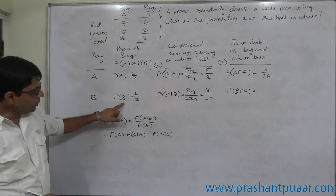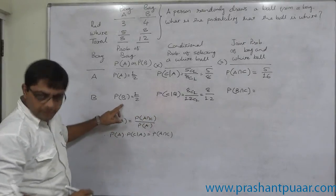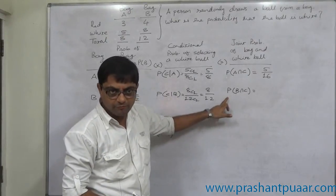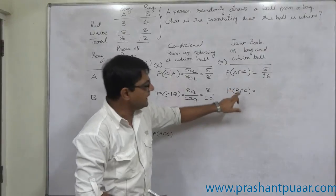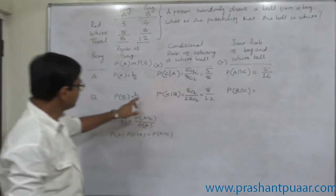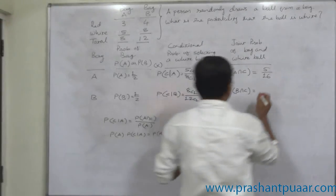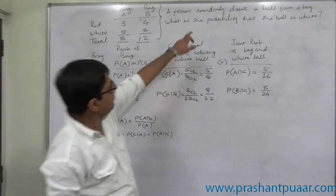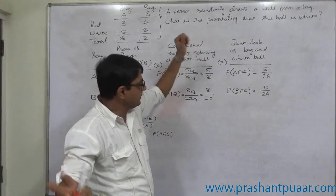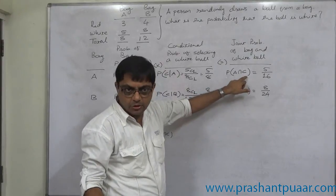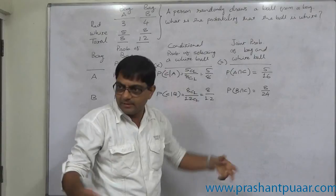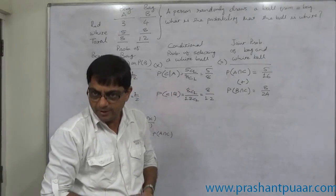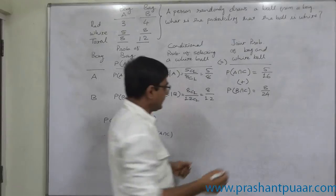Similarly, P(B) into P(C given B) gives us P(B intersection C). The probability of selecting bag B and a white ball from it is 1 by 2 into 8 by 12, which equals 8 by 24. A white ball can be selected in two mutually exclusive ways: bag A and a white ball from it, or bag B and a white ball from it. Adding these probabilities gives us P(C), the probability of selecting a white ball.